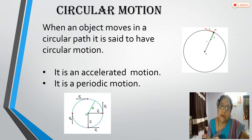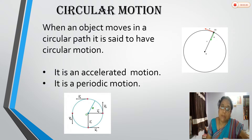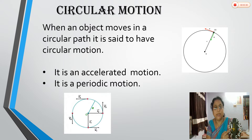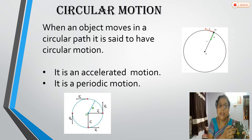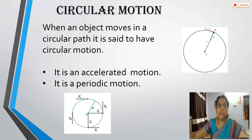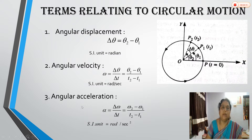The Earth takes 365 days for one revolution, and after 365 days it repeats the same motion — so it is periodic. Another example is the electron revolving around the nucleus in an atom. Also, the tip of the minute hand and hour hand of a clock move in a circle — this is circular motion repeated in equal intervals of time. These are the two special features of circular motion.